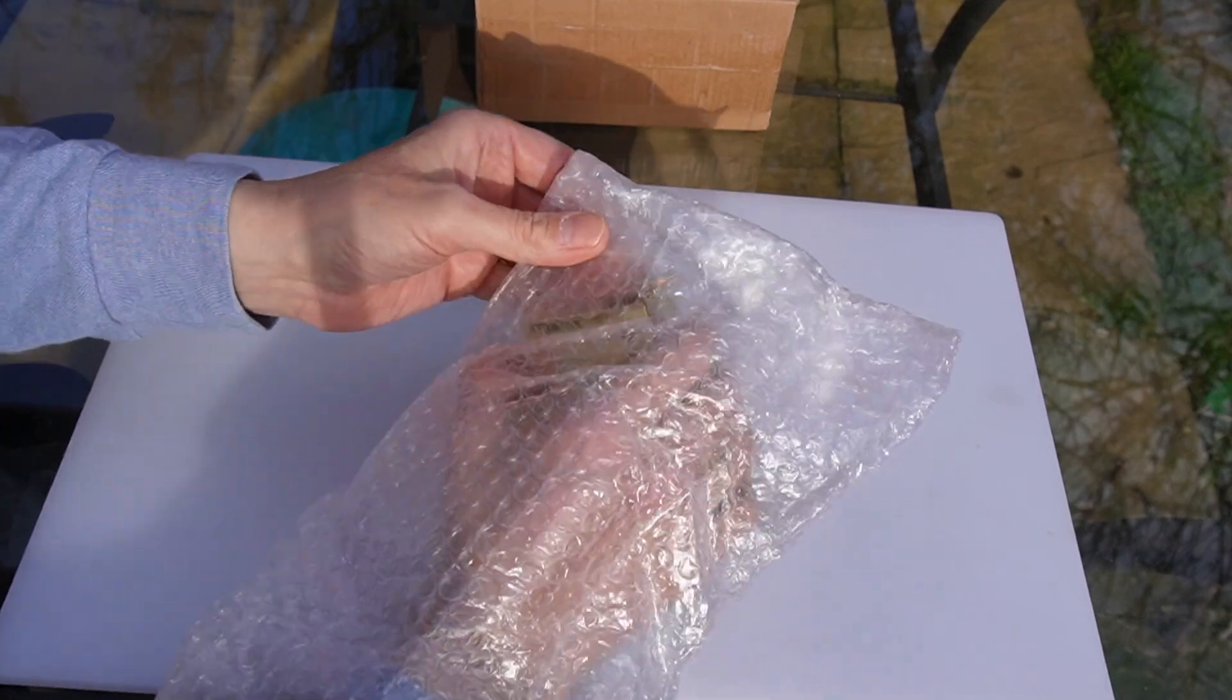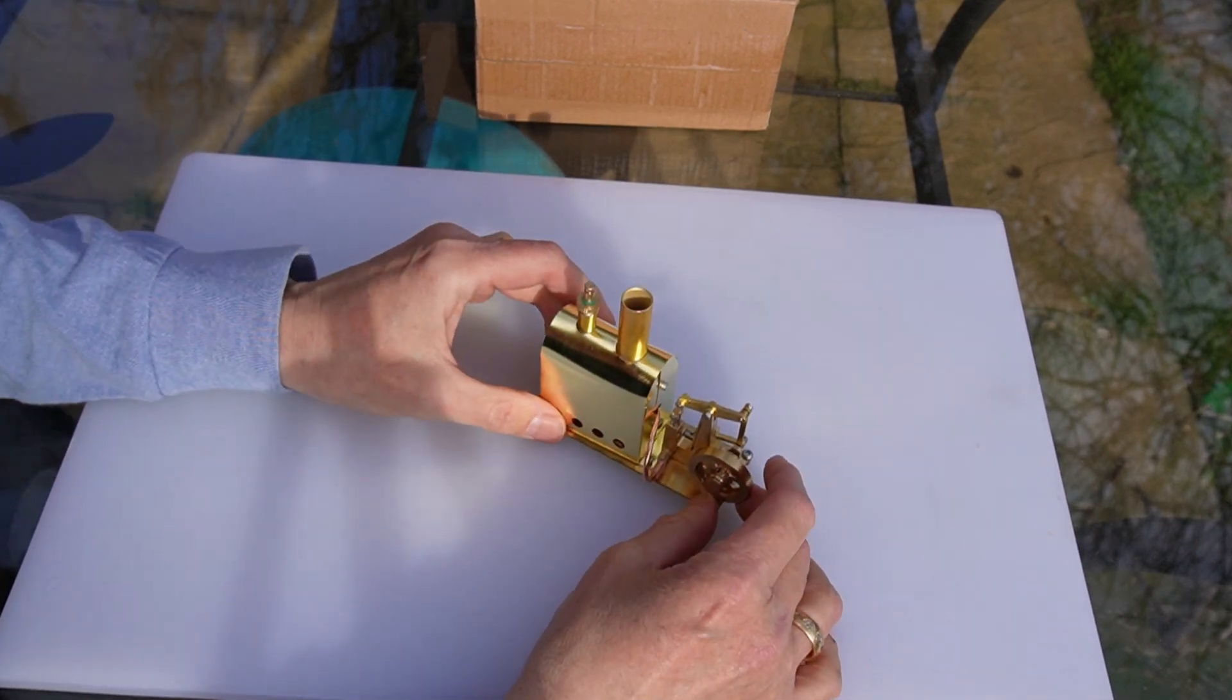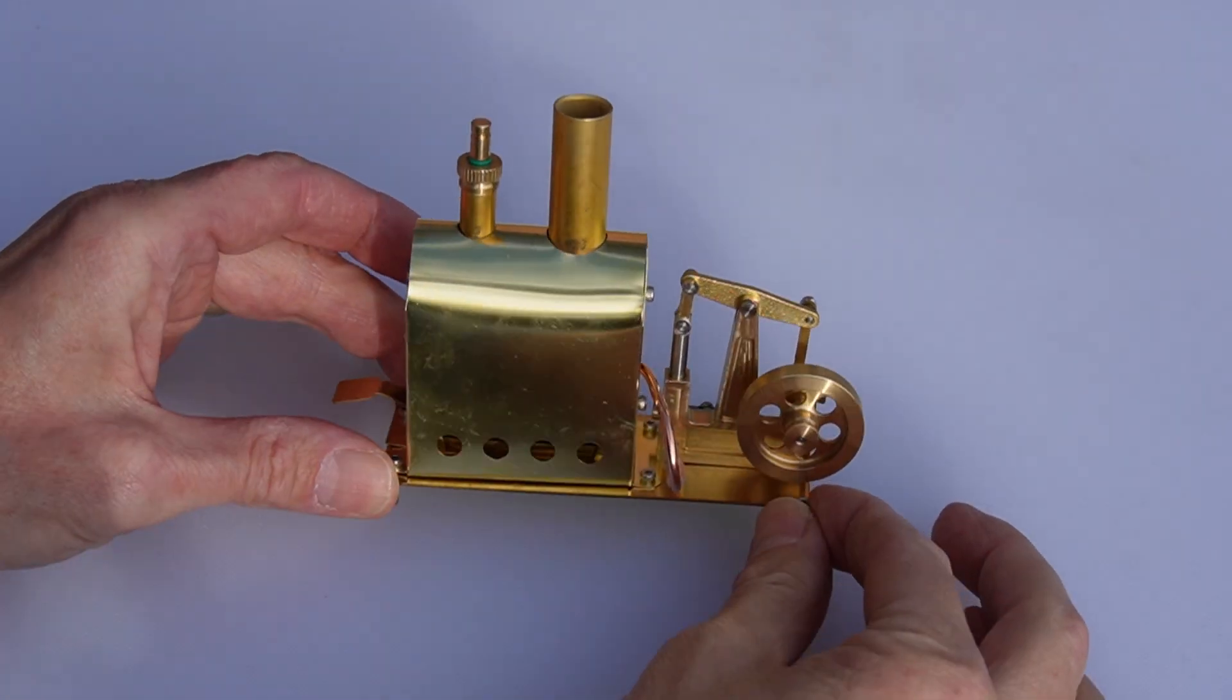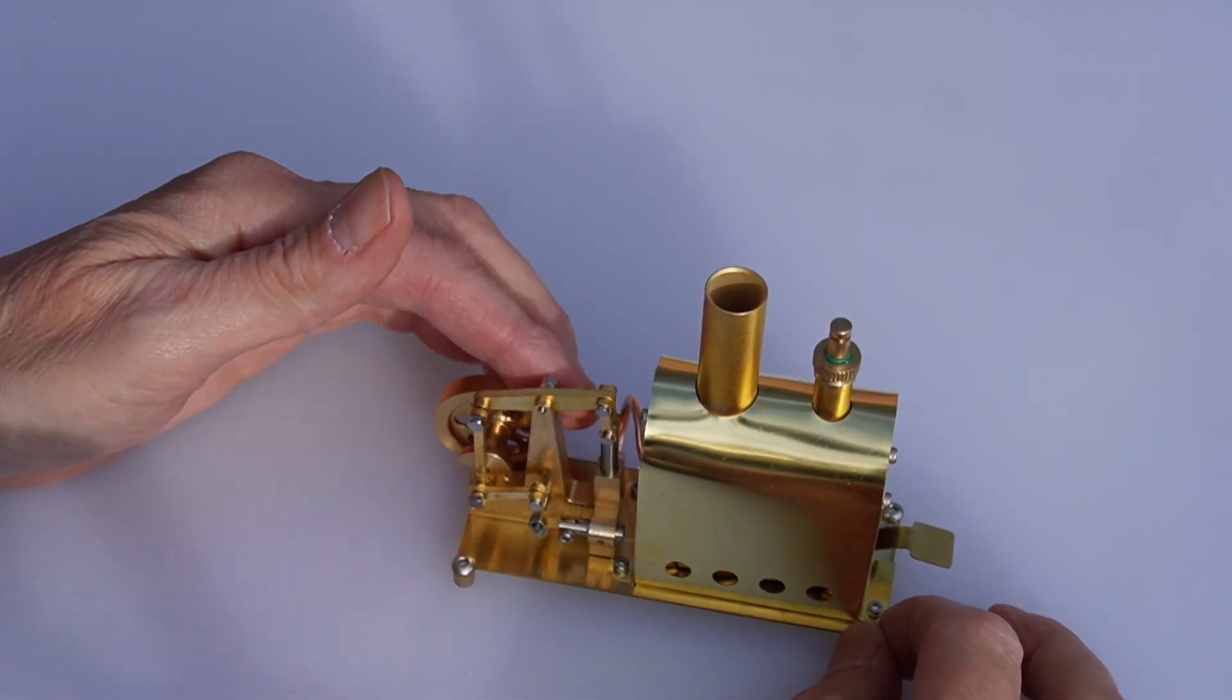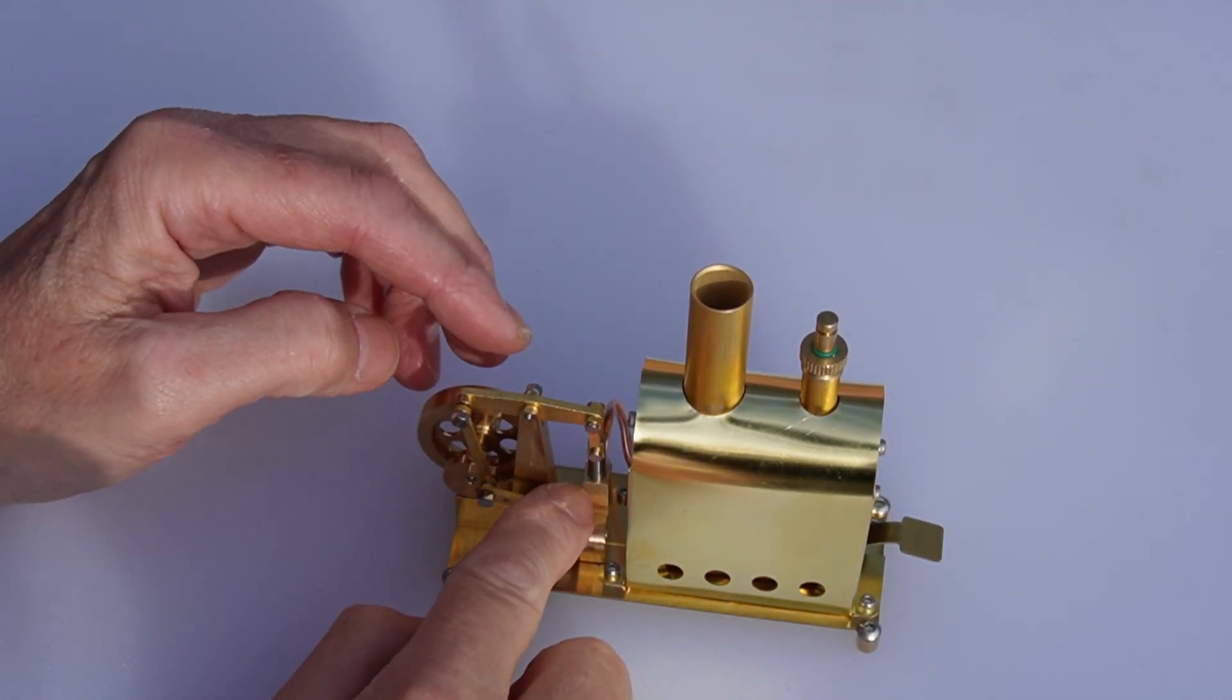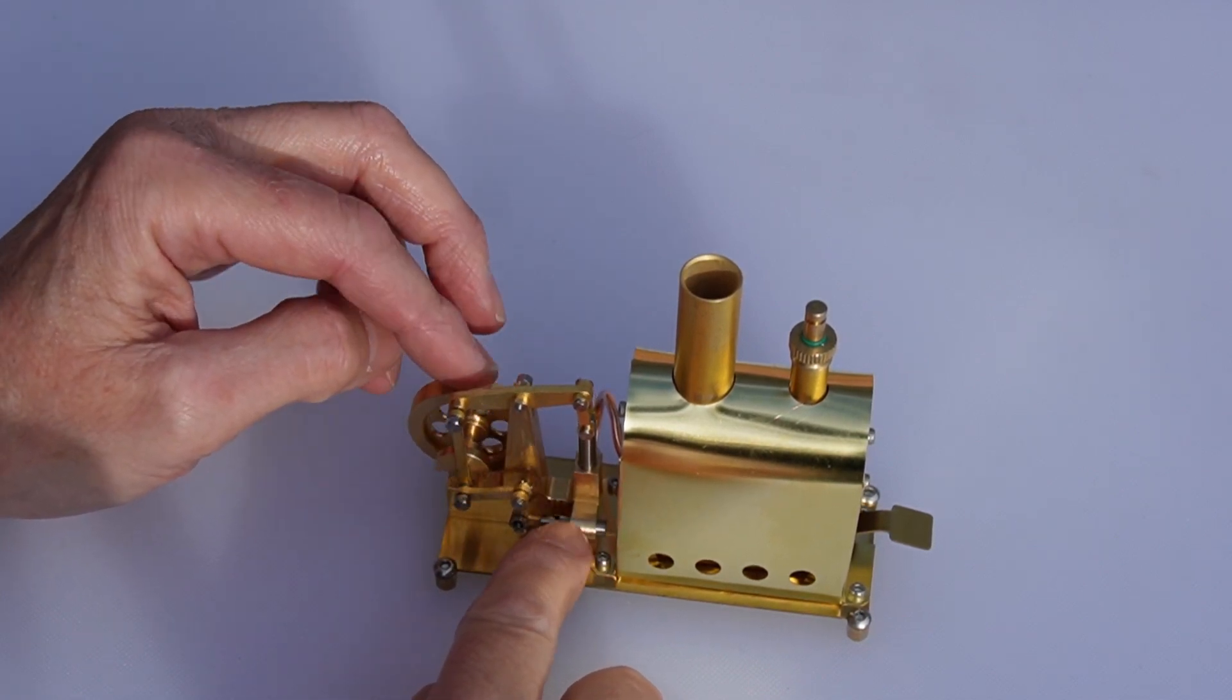Everything is made out of brass, there's no plastic or anything like that. Really is a nice model. And there it is. Oh wow, look at that. I mean, the first thing, it is absolutely tiny. Really is a nice thing to own, isn't it? Very, very nicely made.